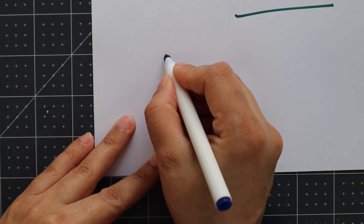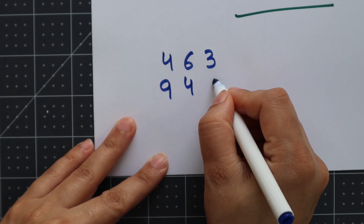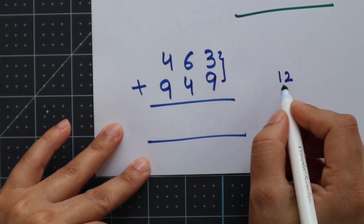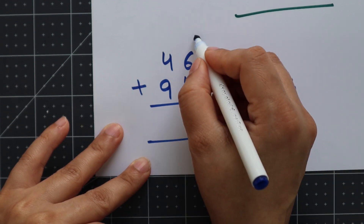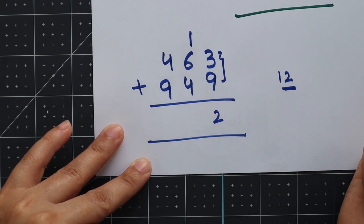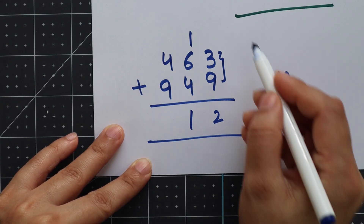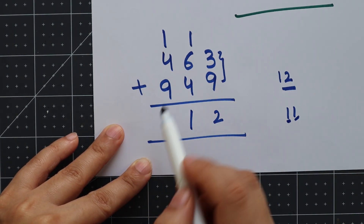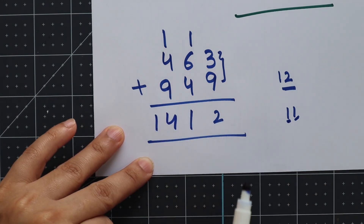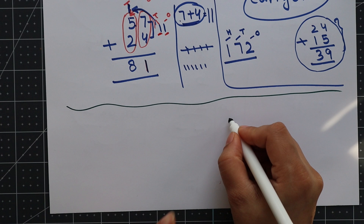Let's say we have 463 plus 949. Again, we add the ones place: 3 plus 9 is 12. So 2 at ones place, and 1 carries forward. Then in the tens place: 1 plus 6 is 7, plus 4 is 11. Again, 1 at the tens place here and 1 carries forward. Then in the hundreds place: 1 plus 4 is 5... working through the digits, the answer is 1,412.